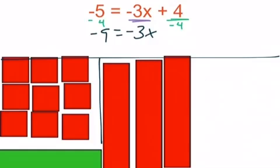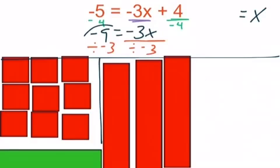Next, since we're multiplying by negative 3, we do the opposite and divide by negative 3 on both sides. When we divide a negative by a negative, we get a positive. 9 divided by 3 is 3. So we get 3 equals x, or x equals 3 when we solve.